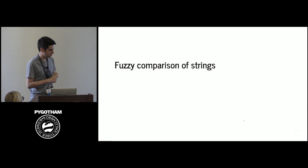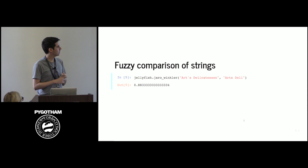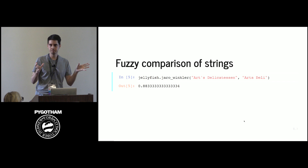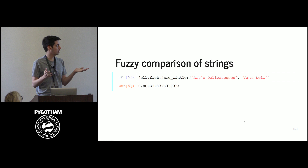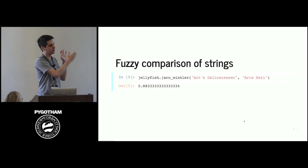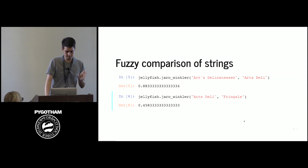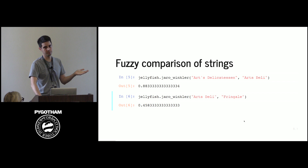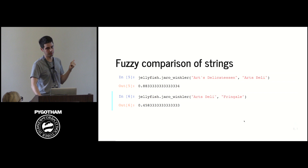Basically, deduplication involves a lot of fuzzy comparison of strings, and we have algorithms for that. For example, the Jaro-Winkler similarity — you give it two strings and it computes a number between 0 and 1 that represents the similarity between those two strings. Jaro-Winkler is used a lot in record linkage projects because it gives priority to the leading characters of the string, and usually the errors are not on the leading characters. So Jaro-Winkler is used a lot because of this property of strings that represent real-world data. If you use Jaro-Winkler to compare things that are different real-world entities, it will give you a lower value, which gives us a hint if a record is a duplicate of another.